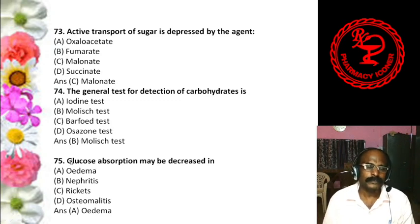Question 25: Two sugars which differ from one another only in configuration around a single carbon atom are termed as — A. Epimers, B. Anomers, C. Optical isomers, D. Stereoisomers. The answer is A, epimers — two sugars differing in configuration around a single carbon atom are epimers.